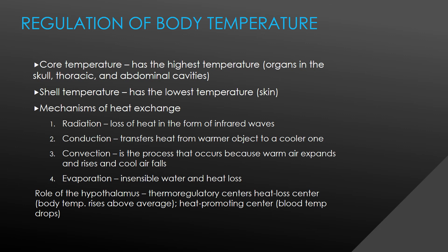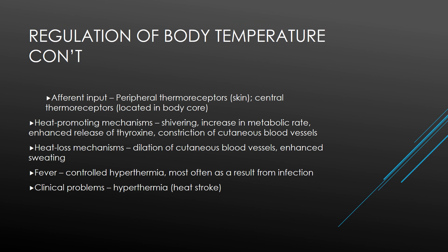The thermoregulatory center includes a heat-loss center, which activates when body temperature rises above average, and a heat-promoting center, which activates when blood temperature drops. Afferent input: peripheral thermoreceptors are found in the skin and central thermoreceptors are located in the body's core. Heat-promoting mechanisms: shivering increases the metabolic rate, enhanced release of thyroxin, and constriction of cutaneous blood vessels. Heat-loss mechanisms: dilation of cutaneous blood vessels and enhanced sweating. A fever is controlled hyperthermia, most often as a result of infection.